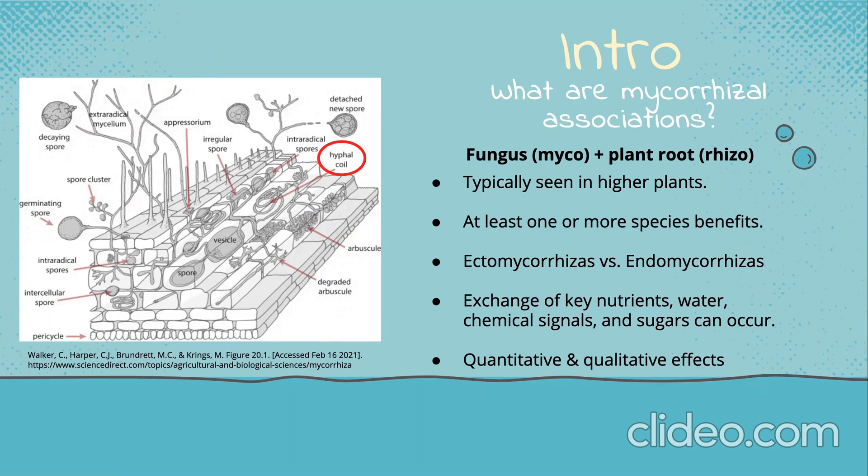Before we dive into some of the interesting details, let's go over some important facts about mycorrhizal associations. Firstly, this association can be divided into two groups based on the location of the nutrient exchange mechanism. Ectomycorrhizal fungi form the nutrient exchange mechanism outside of the plant root cells, and endomycorrhizal fungi form these exchange mechanisms inside the root cell by penetrating the plant cell wall.